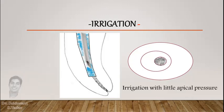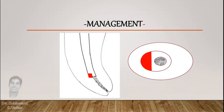Management will start from copious irrigation with little apical pressure to wash out all the loose debris. This will help in preventing false patency filling. The red area is the part where the file every time hits when you try to advance it in the canal, as you can see in the picture.